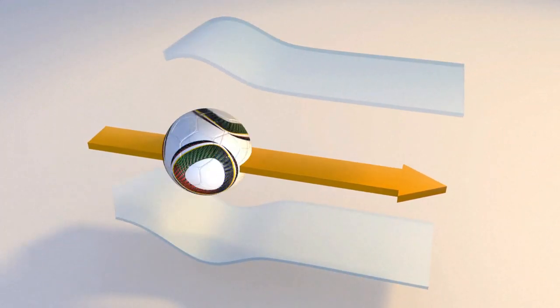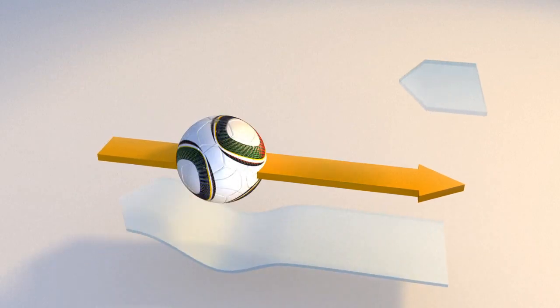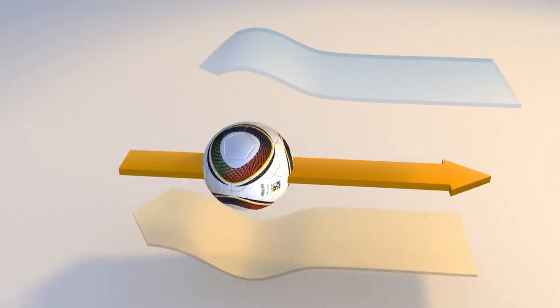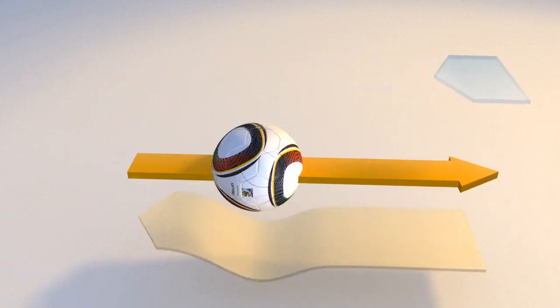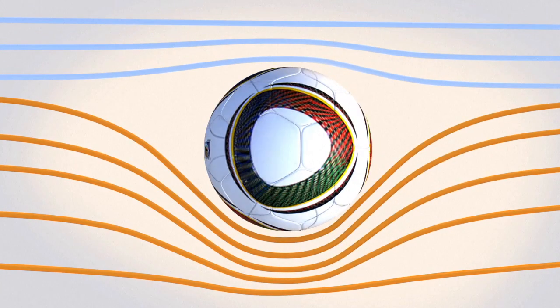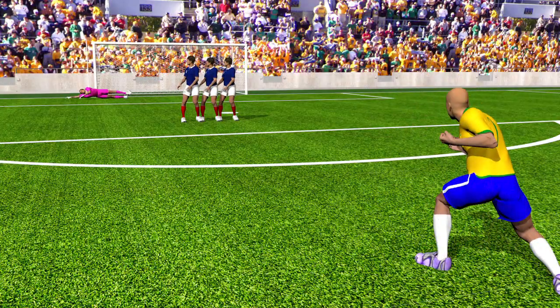The spin creates a difference in the speed of airflow across the ball. Air travels faster where the ball is moving in the same direction as airflow, meaning the pressure is lower. On the other side, airflow is slower and the pressure is greater. The ball is naturally sucked towards the depression, veering from its apparent trajectory.